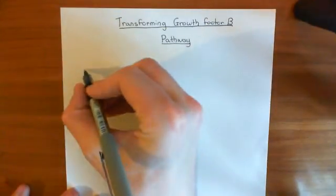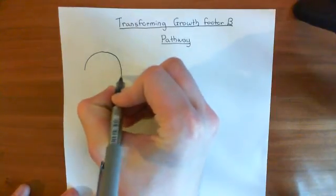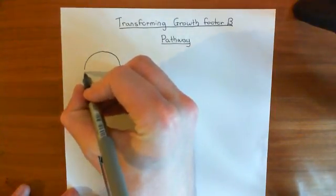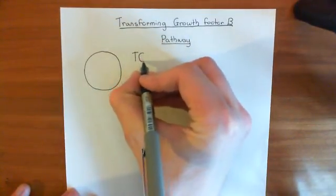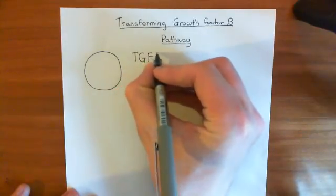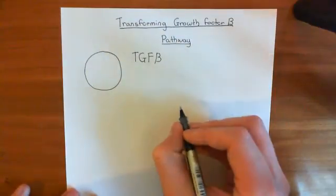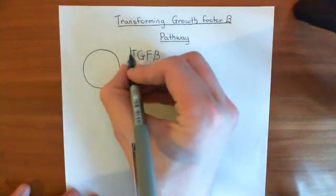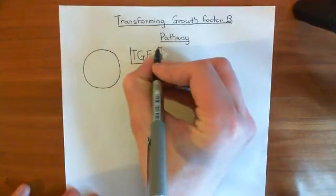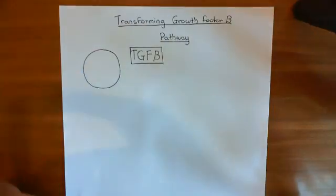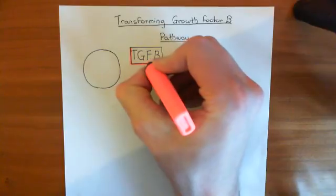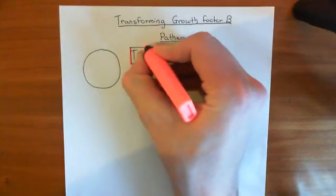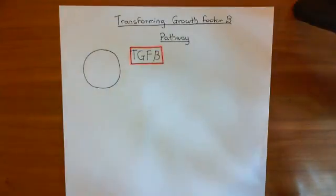Let's say we have a cell here, and we're going to expose this cell to transforming growth factor beta, often abbreviated to TGF-beta. Let's say this is the TGF-beta molecule. In the cell membrane, there are transforming growth factor beta receptors. Transforming growth factor beta receptors consist of a dimer of two types of receptor: a type 1 transforming growth factor beta receptor, and a type 2 transforming growth factor beta receptor.